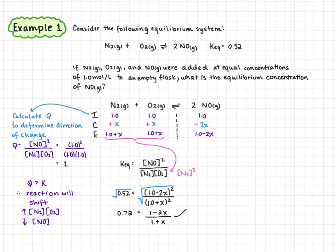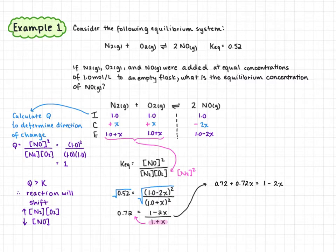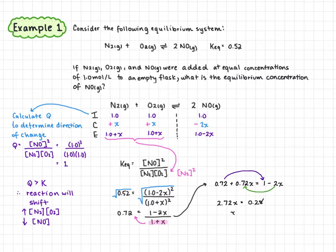We're going to rearrange this, keeping the denominator together. We take the 1 plus x value and multiply each term by 0.72: 1 times 0.72 is 0.72, and x times 0.72 is 0.72x. That equals 1 minus 2x. Moving 0.72 to one side and grouping x terms to get positive x's, we have 2.72x equals 0.28. Dividing 0.28 by 2.72, we get x equals 0.102.